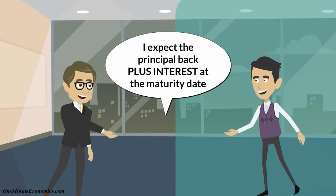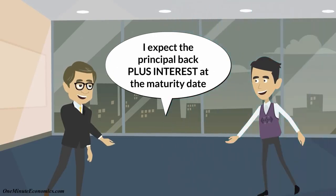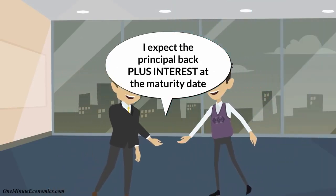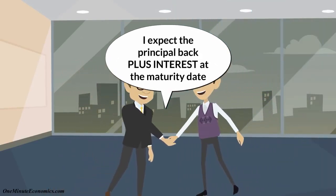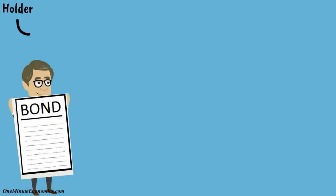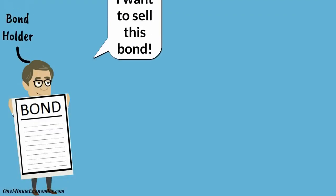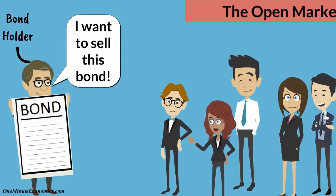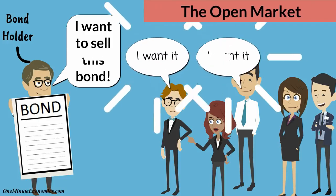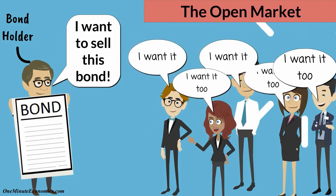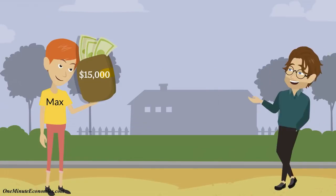And finally, it is clearly stated when the deal between the two parties ends — in other words, what the so-called maturity date is. However, unlike loans that you make to friends, bonds are financial instruments that can be bought and sold on the open market.